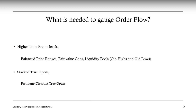What is needed to gauge order flow? In order to gauge order flow, you need higher timeframe levels. More specifically, you need balanced price ranges, fair value gaps, and liquidity pools — which are basically old highs or old lows.